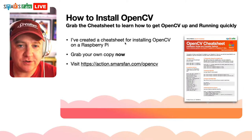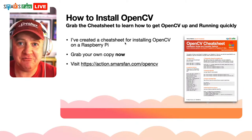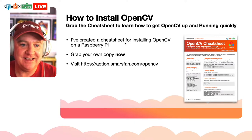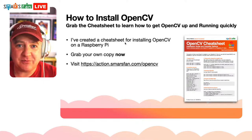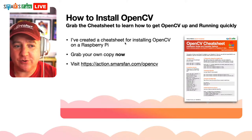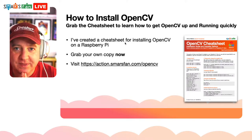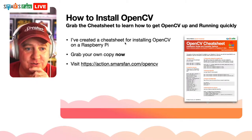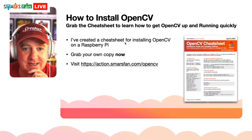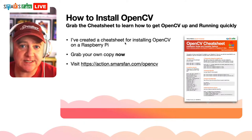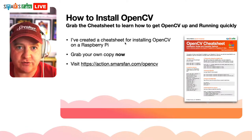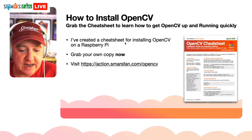The next step is to get OpenCV installed on our Raspberry Pi. I've created a cheat sheet PDF for you — a free giveaway. Go to action.smarsfan.com/opencv, register, and get your copy completely free, no strings attached. I'm going to follow that now as we install OpenCV.